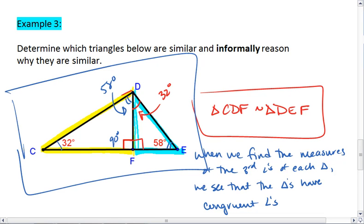those markings on the picture is enough informal reasoning to show, as long as you also write angle-angle-triangle similarity. This is why it works.